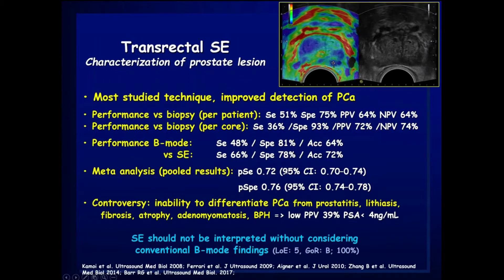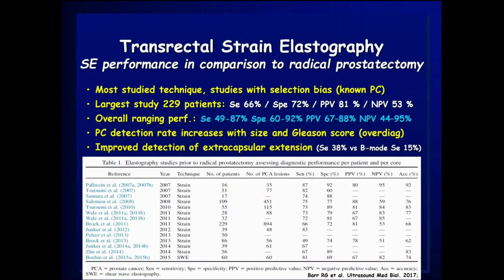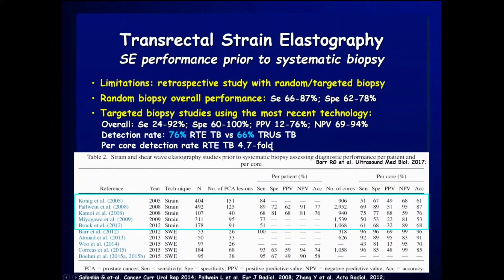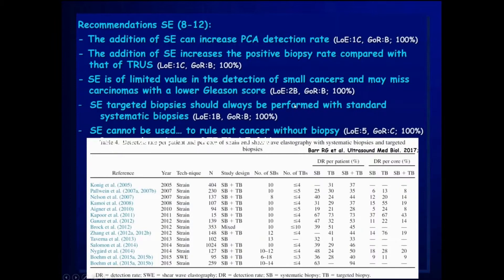Looking at technique performance, both strain and shear wave elastography improve detection of prostate cancers, as shown by values from many papers and meta-analyses. Strain elastography should not be interpreted without considering conventional B-mode findings. Studies comparing results against radical prostatectomy or biopsy show strong improvement in sensitivity and specificity. The addition of strain elastography increases positive biopsy rate compared to conventional transrectal ultrasound alone, though it is of limited value for detecting small cancers and cannot rule out cancer without biopsy.